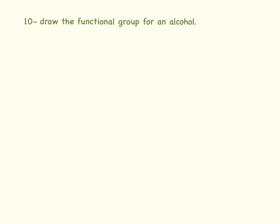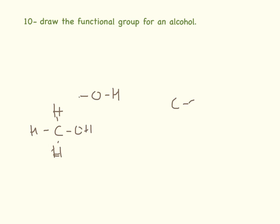And lastly, the functional group for an alcohol is simply the OH group. You can get two marks for that. You should know that methanol looks like this with its one carbon, ethanol has two carbons, and propanol has three carbons.